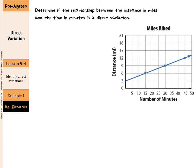Our first example deals with identifying direct variations. Determine if the relationship between the distances in miles and the time in minutes is a direct variation. Let's look at our ordered pairs here. We have 15, 6. We have 30, 9. We have 45, 12.